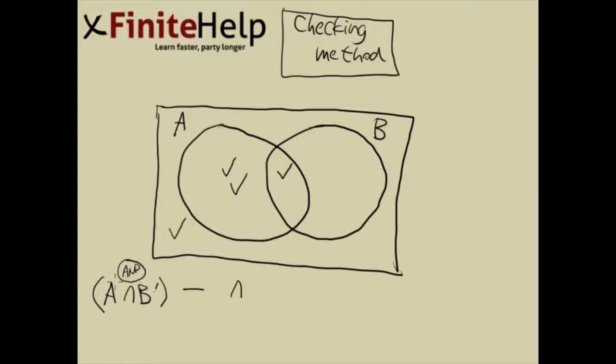So something has to be in A and B prime in order to be in this set. So we're going to look at this from the checking method perspective: that intersection means double checks or above.